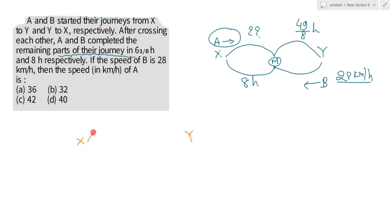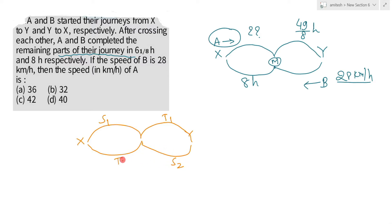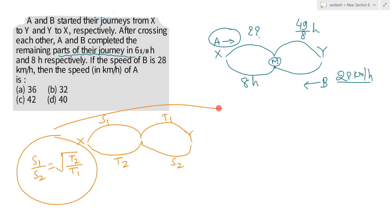One person came here and then reached the destination — let's say their speed is S1 and they took time T1. Another person started from Y, came to the meeting point, and then reached X — let's say their speed is S2 and they took time T2. The simple relation is: S1 upon S2 equals the square root of T2 upon T1. This is the same concept we will use to solve this question. A theoretical proof has also been given in a separate video.